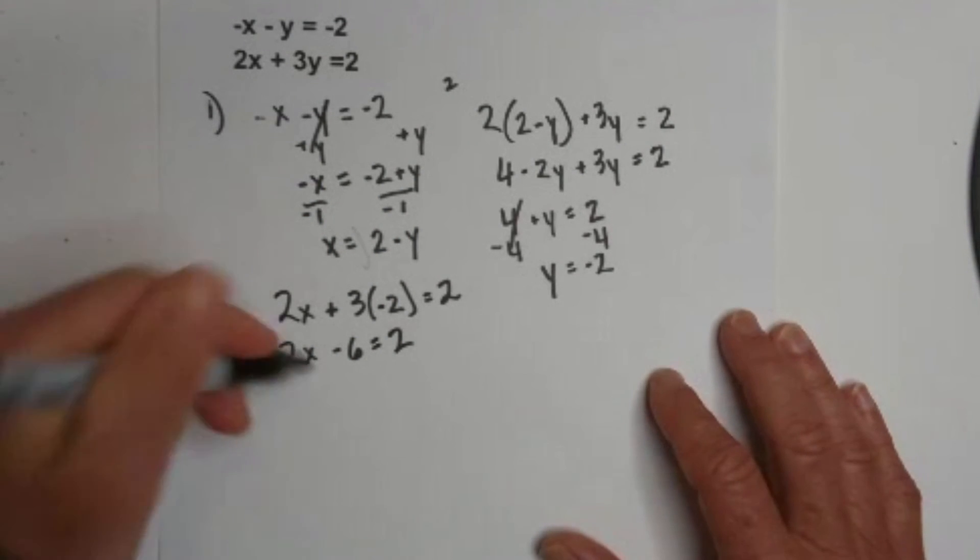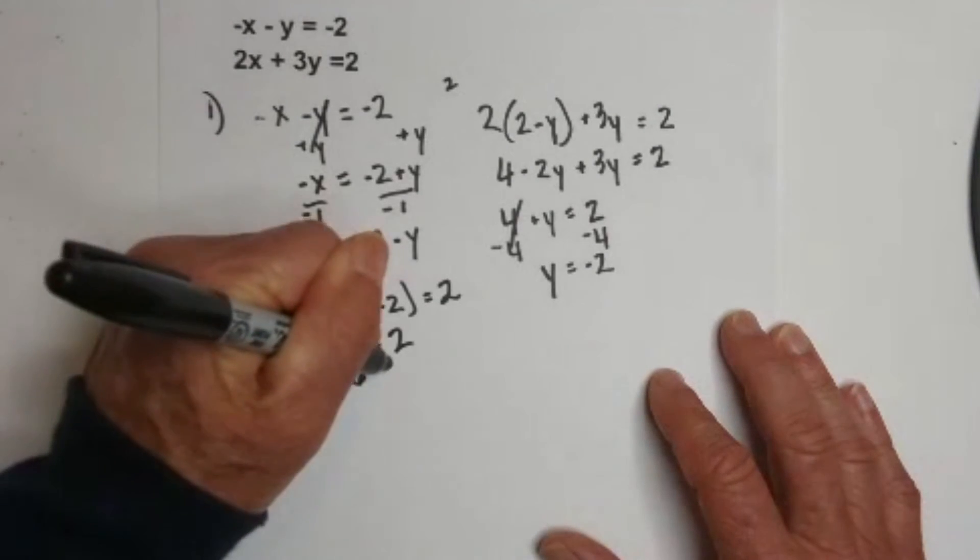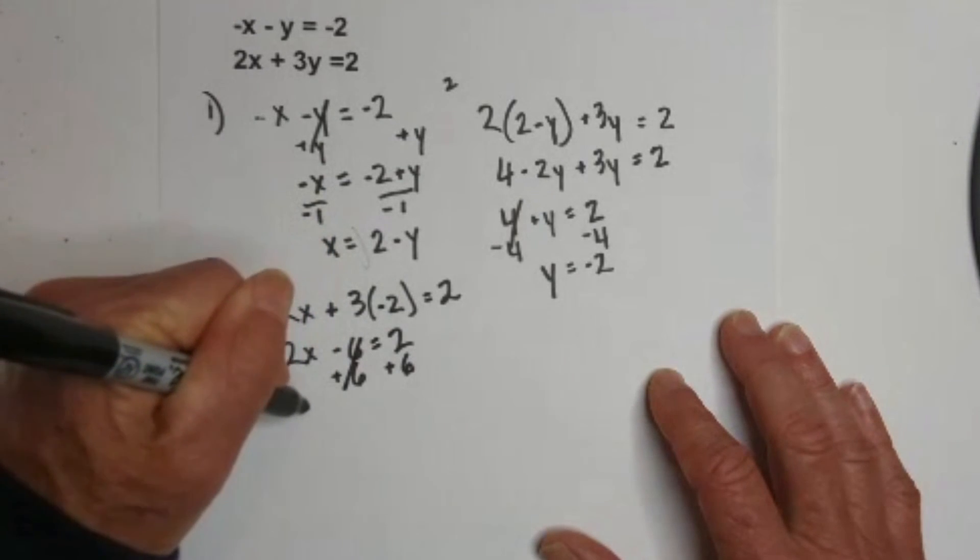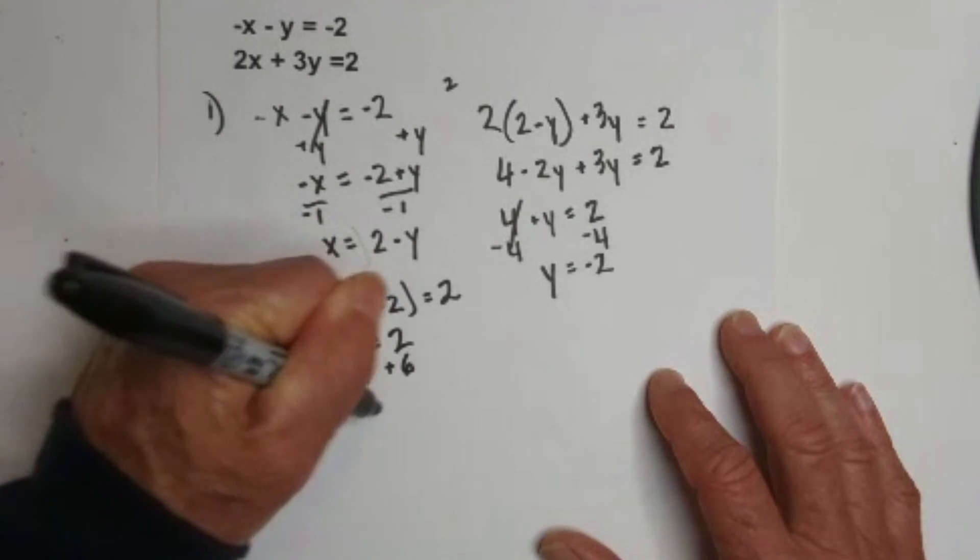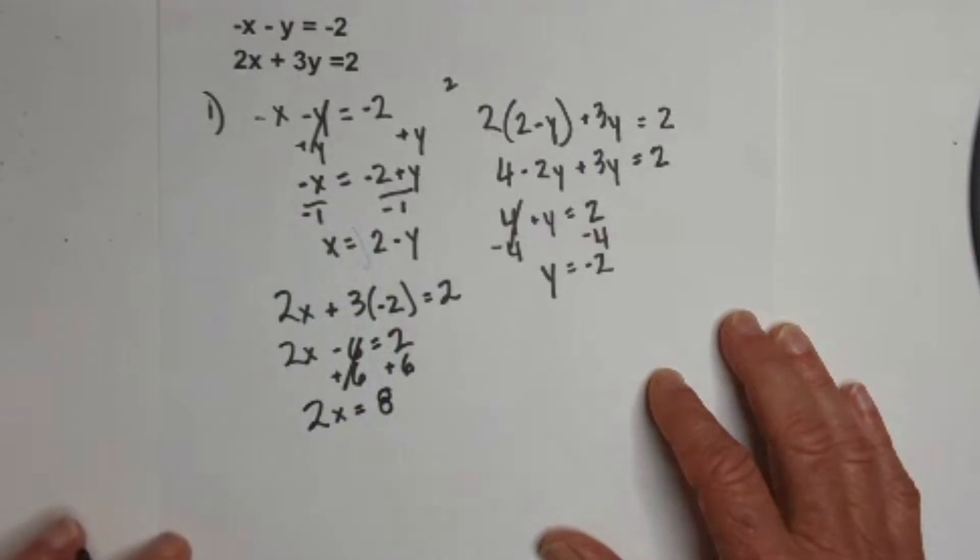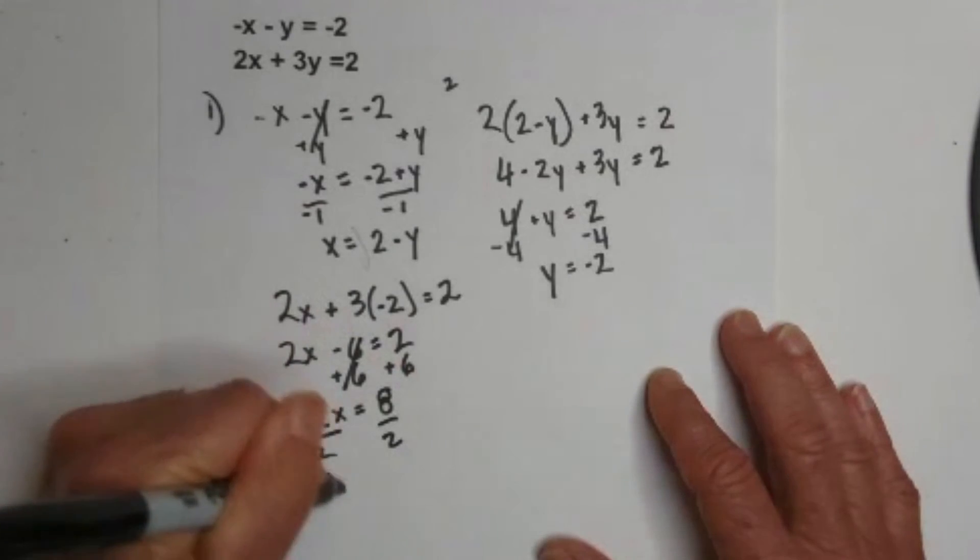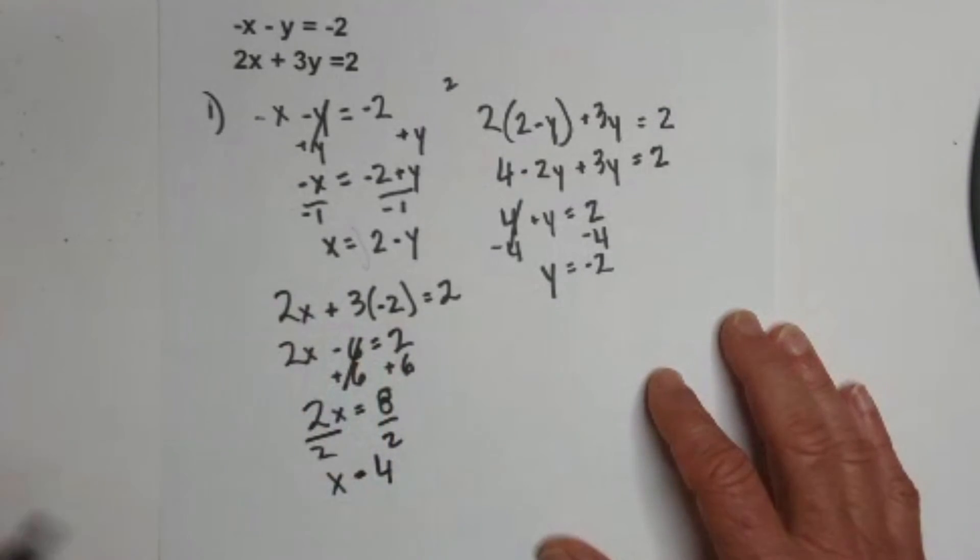Okay. Now, what I'm going to do is I'm going to add 6 to each side. Okay. These cancel. I'll bring 2x = 8.